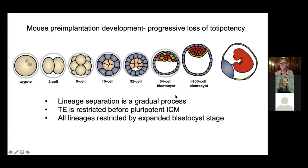By the time you get to the blastocyst stage, you can't change cell fate — turn cells inside out, upside down, they are restricted. Prior to that stage, it's a gradual process.